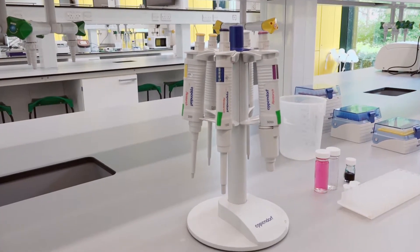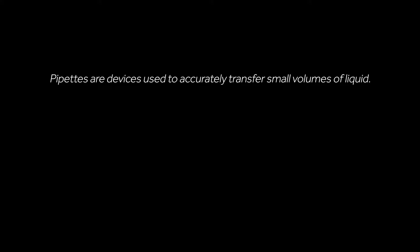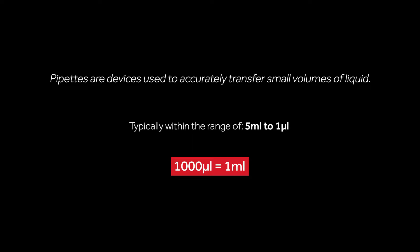Pipettes are devices used to accurately transfer small volumes of liquid, normally between 5 milliliters and 1 microliter. Remember that throughout this video, 1000 microliters is the same as 1 milliliter.